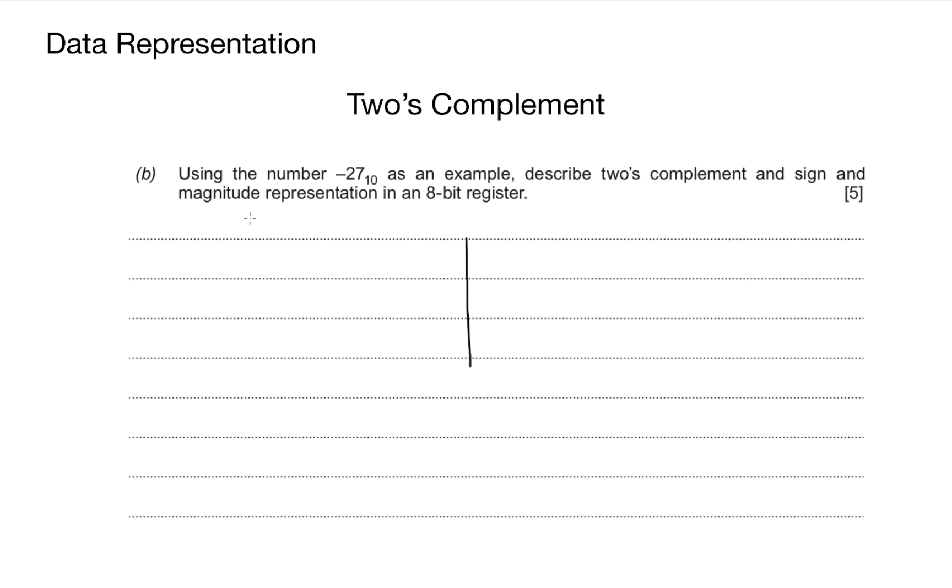In this question, we're using the number -27 as an example. Describe two's complement and sign and magnitude representation in an 8-bit register. It's been very specific that we're using 8 bits and need to show both two's complement and sign and magnitude. I'll divide my page in half, write two's complement on the left, sign and magnitude on the right, and give an example.